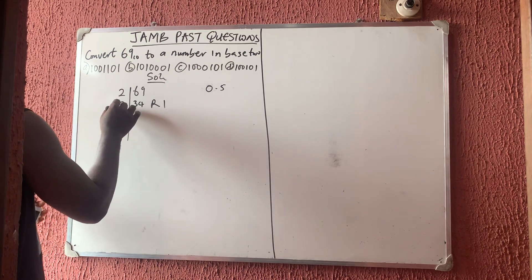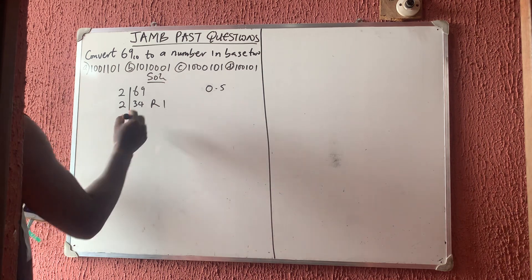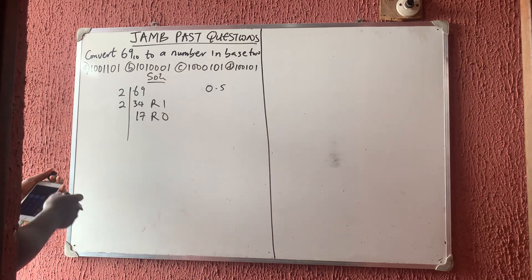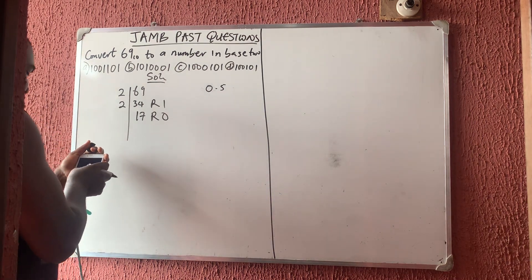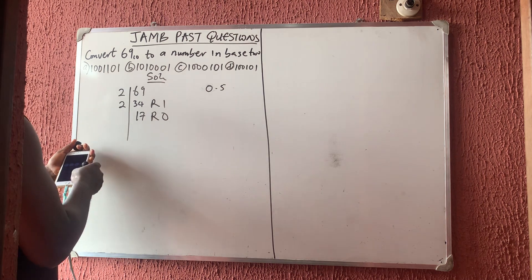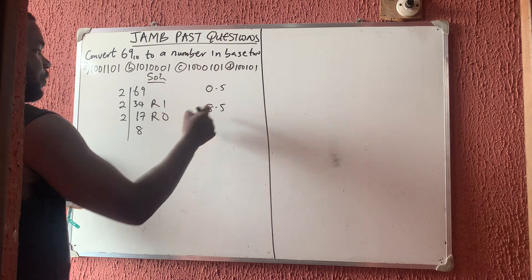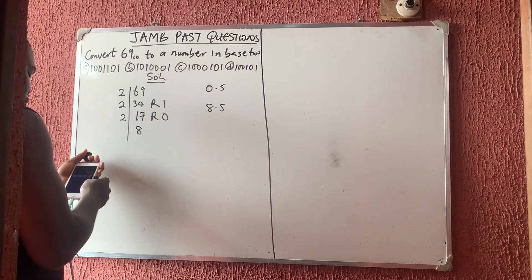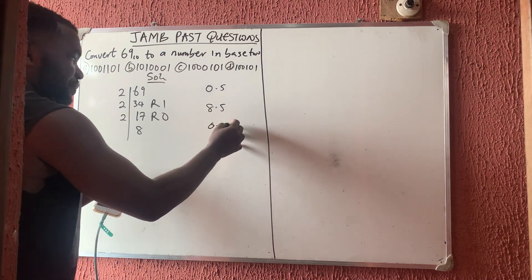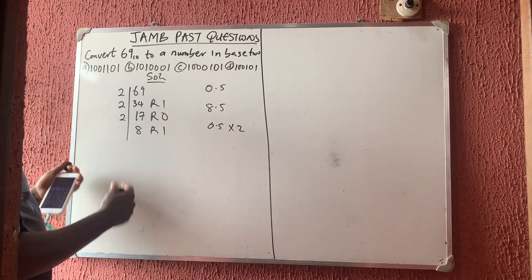Now 34 divided by 2 gives 17 — no decimal point, so remainder is 0. Then 17 divided by 2 gives 8.5. Write the whole number 8, subtract to get 0.5, then multiply by 2 to get remainder 1.